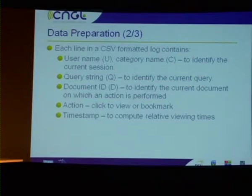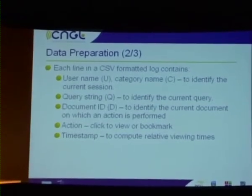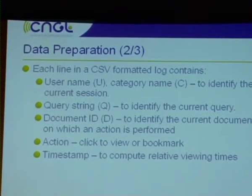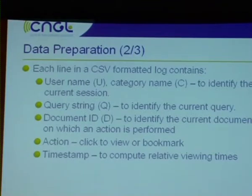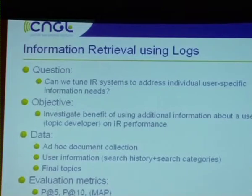The data we store includes, as already mentioned, additional information like the username and category name to identify what's happening in each session — which queries belong together. We store the query string, the document IDs which are retrieved, and additional information on the documents that are viewed or bookmarked for reading later. We also mark every user action with a timestamp. The queries are represented in this extended TREC-style format using additional fields for username and category.